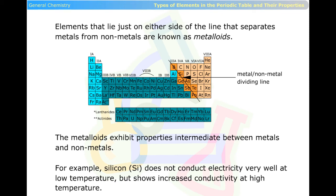For example, silicon does not conduct electricity very well at low temperature, but shows increased conductivity at high temperature.